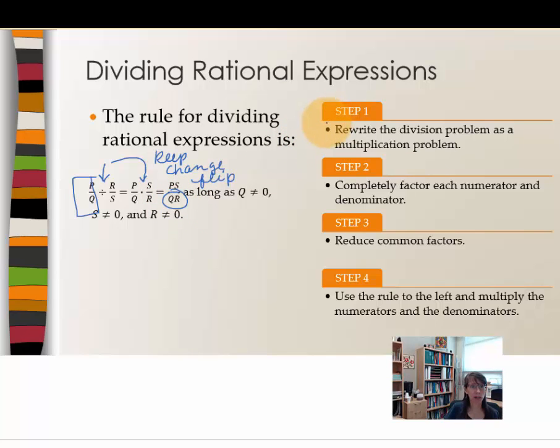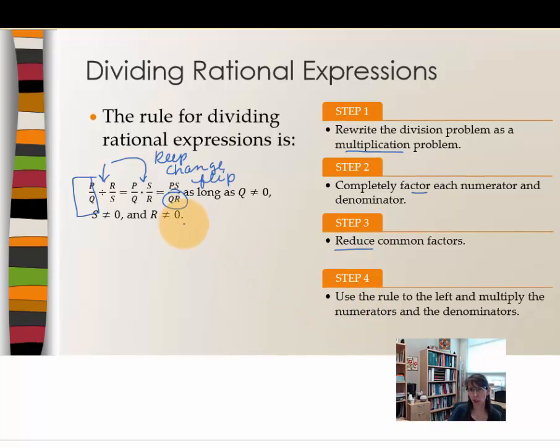Step one, you want to recall, rewrite the division problem as multiplication. Completely factor each numerator and denominator. Reduce any common factors that you find. And then use the rule to the left to keep change flip.